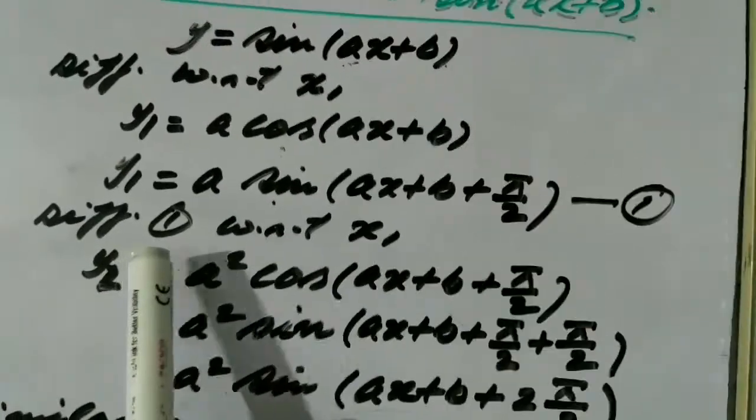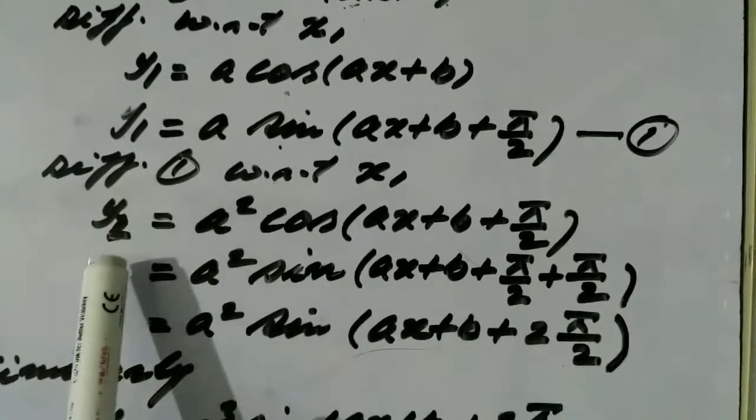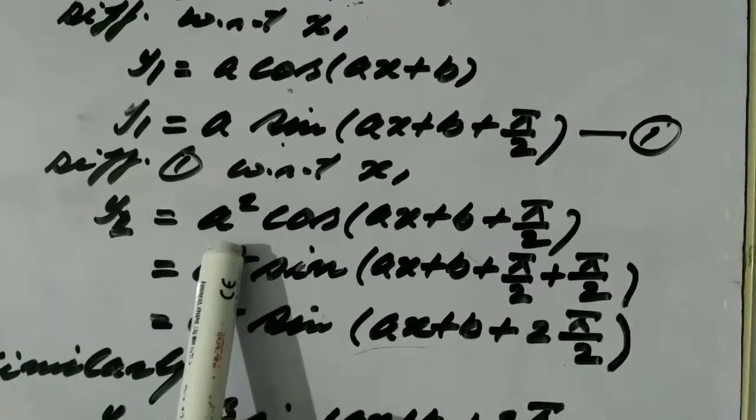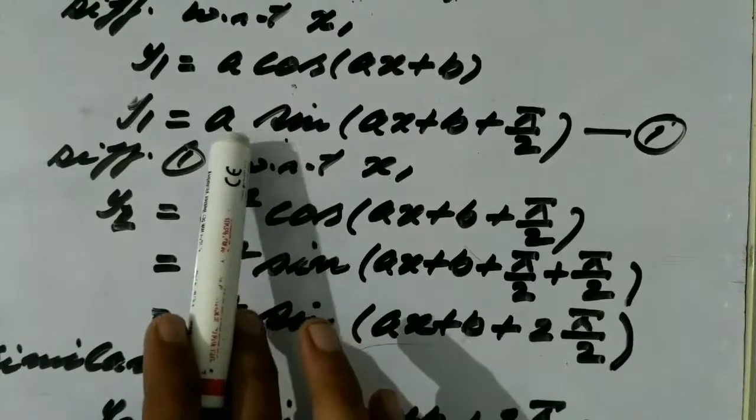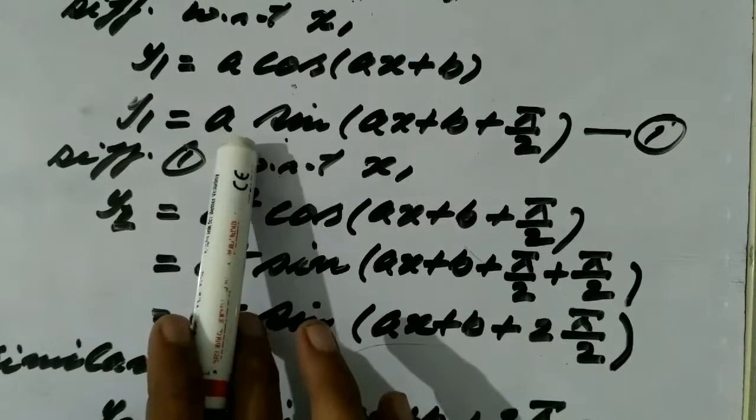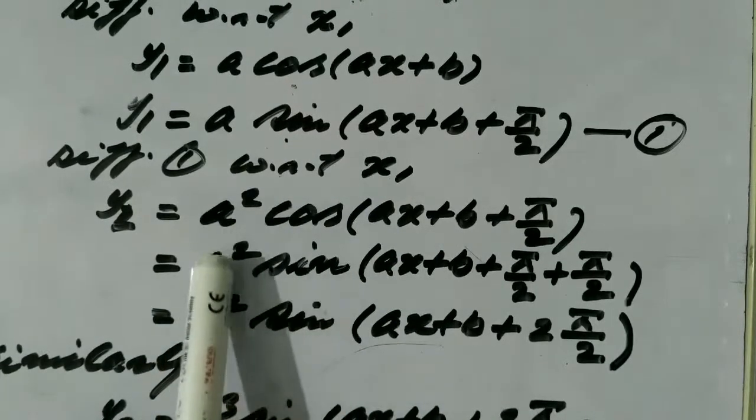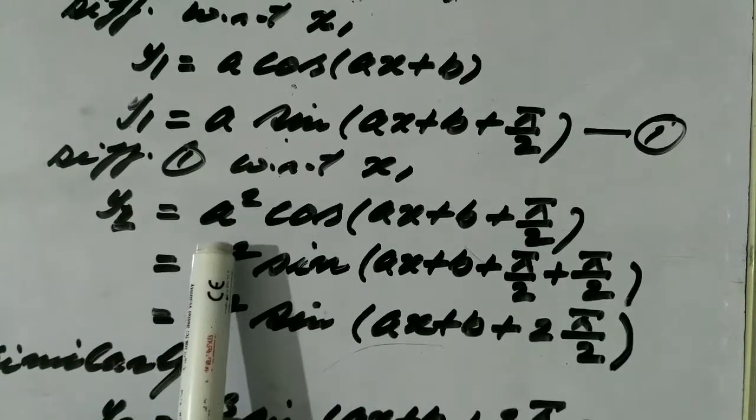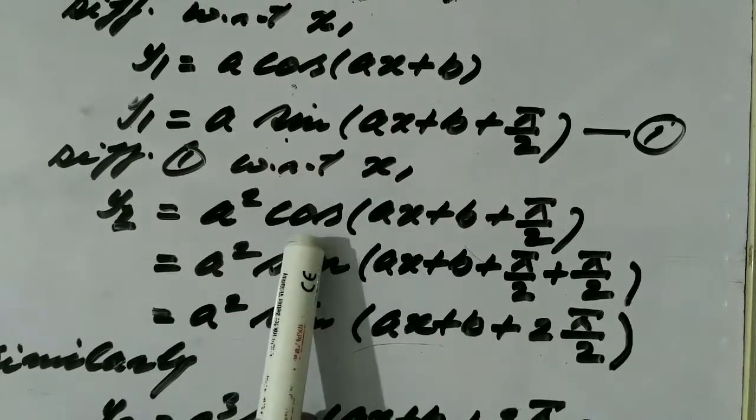Again, we have to differentiate now equation number 1 with respect to x. So we get y2 equals a squared, because one more power of a we get after differentiating, and this sin becomes cos.